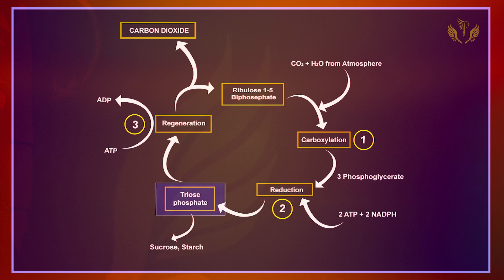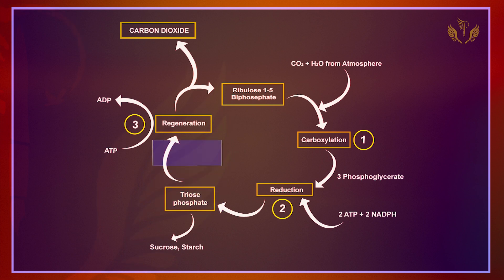After Carboxylation, 3-phosphoglycerate is formed, which can go on to form sucrose and starch. During Reduction, 2 ATP and 2 NADPH are used, and Triose-phosphate is formed.